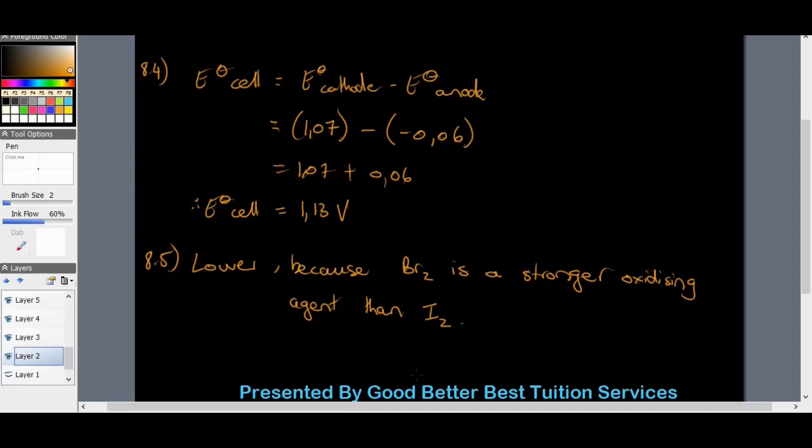So we know that definitely the amateur reading will be lower as it is a weaker, iodine I2, is a weaker oxidizing agent than Br2. Or in the same breath, vice versa, Br2 is a stronger oxidizing agent than I2.